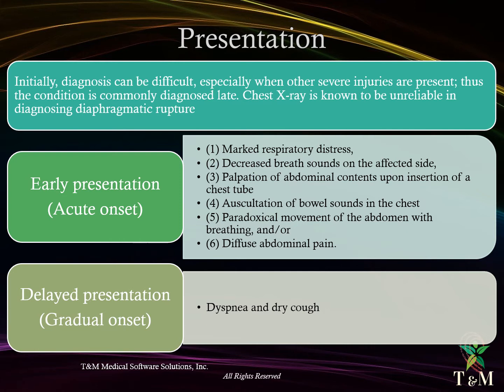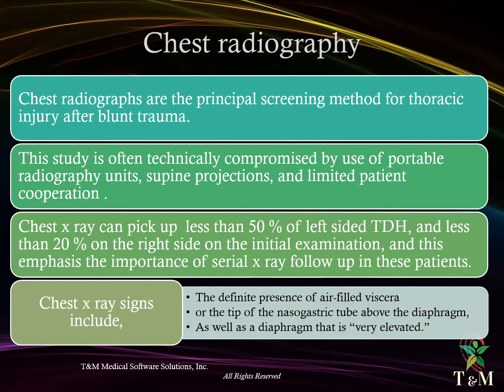Delayed presentation or gradual onset: these patients present with gradual onset of dyspnea and dry cough. Chest radiography is the principal screening method for thoracic injury after blunt trauma. This study is often technically compromised by use of portable radiography units, supine projections, and limited patient cooperation. Chest X-ray can only pick up less than 50% of left-sided traumatic diaphragmatic rupture and less than 20% on the right side on initial examination, emphasizing the importance of serial X-ray follow-up. Chest X-ray signs include the definite presence of air-filled viscus or nasogastric tube above the diaphragm, as well as a markedly elevated diaphragm.